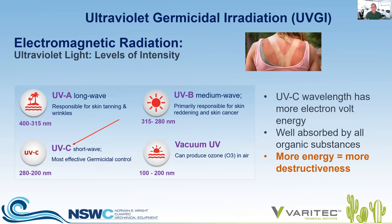Just as there are ranges of energy along the electromagnetic spectrum, there are ranges within UV light. UVA long-wave light is responsible for skin tanning and wrinkles, between 315 and 400 nanometers. UVB medium-wave light is responsible for skin reddening, sunburn, and skin cancer. UVC light, our focus today, ranges between 200 and 280 nanometers and is most effective for germicidal control — it's like a key going in a lock. Then there is vacuum UV light at 100 to 200 nanometers, at which you can actually create ozone.